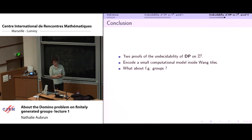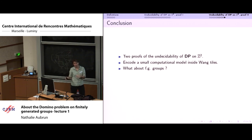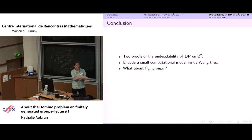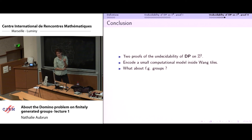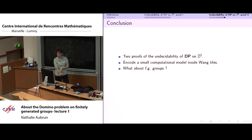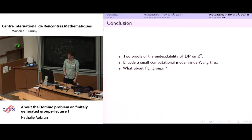We have seen two different proofs. The ideas and realizations are really different: one uses a hierarchy of squares via the Robinson tiling, the other encodes orbits of a small dynamical system inside Wang tiles. But in both proofs the idea is to encode a computational model inside Wang tiles. I will end with the question: what about finitely generated groups? How can these two techniques be generalized or adapted to other groups? I will try to answer this question tomorrow. Thank you.